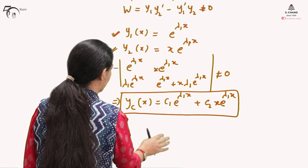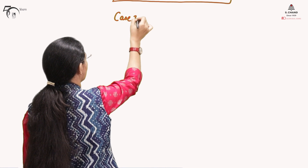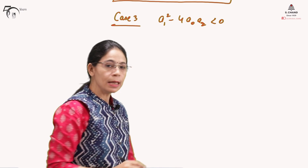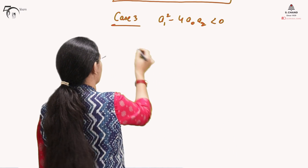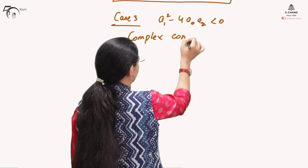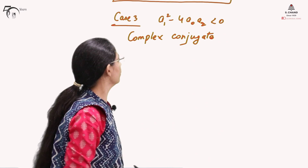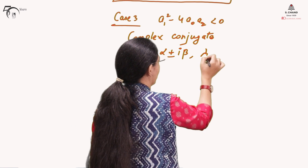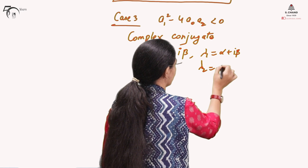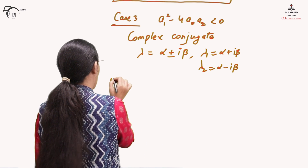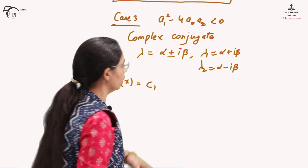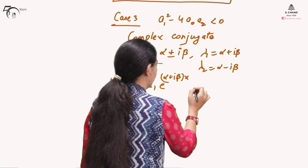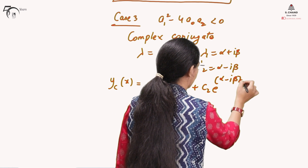Case 3: If the discriminant A₁² − 4A₀A₂ < 0, the two roots are complex conjugates. Lambda takes the form λ = α ± iβ, so λ1 = α + iβ and λ2 = α − iβ. Writing the complementary function in the same way as for real and distinct roots gives C1·e^((α+iβ)x) + C2·e^((α−iβ)x).